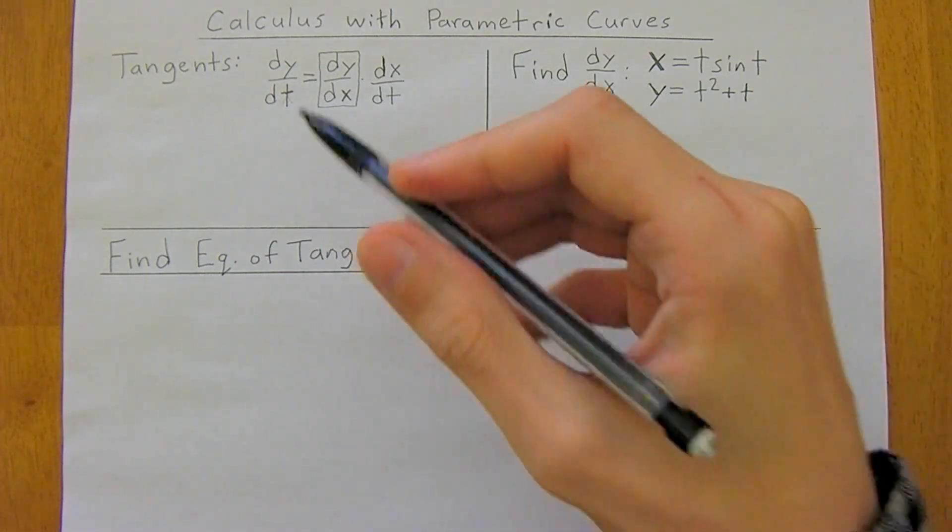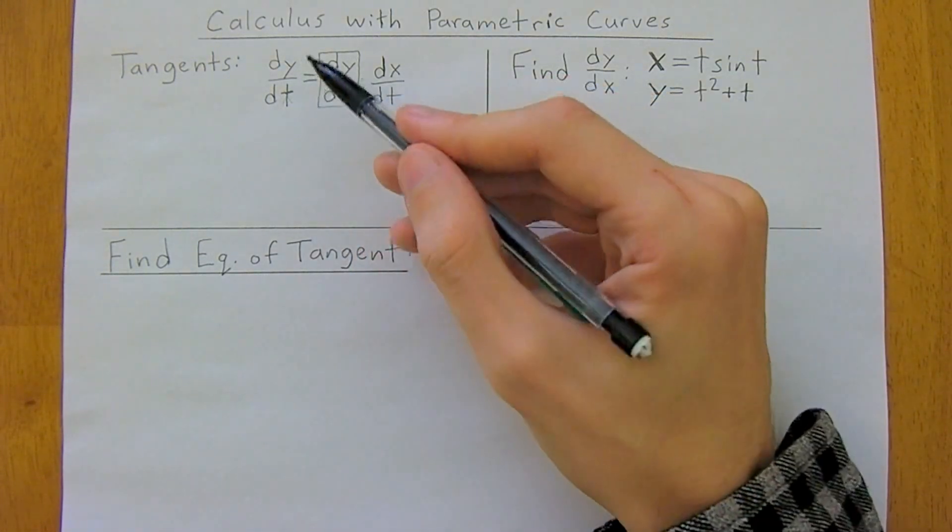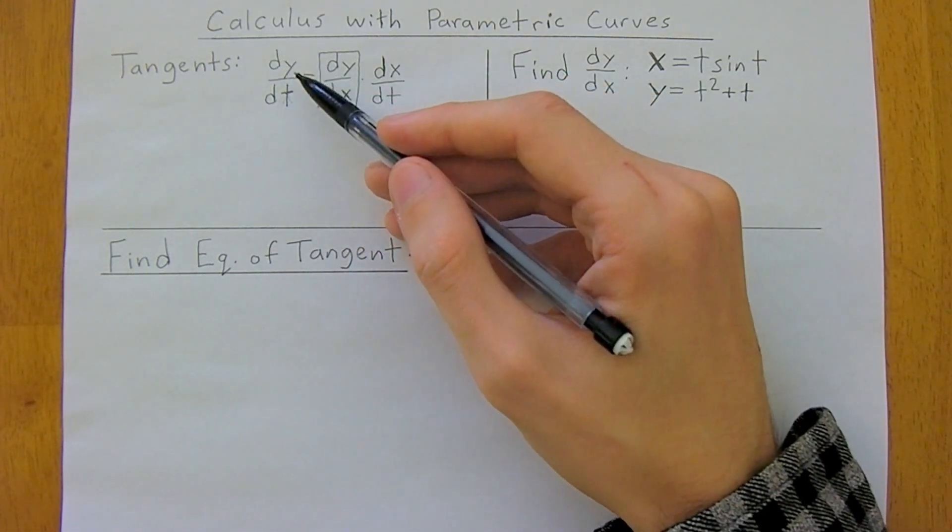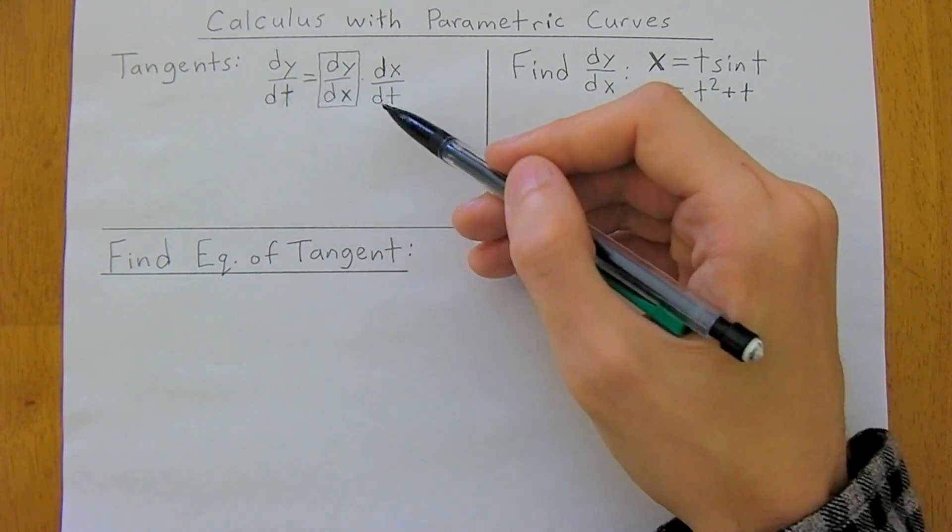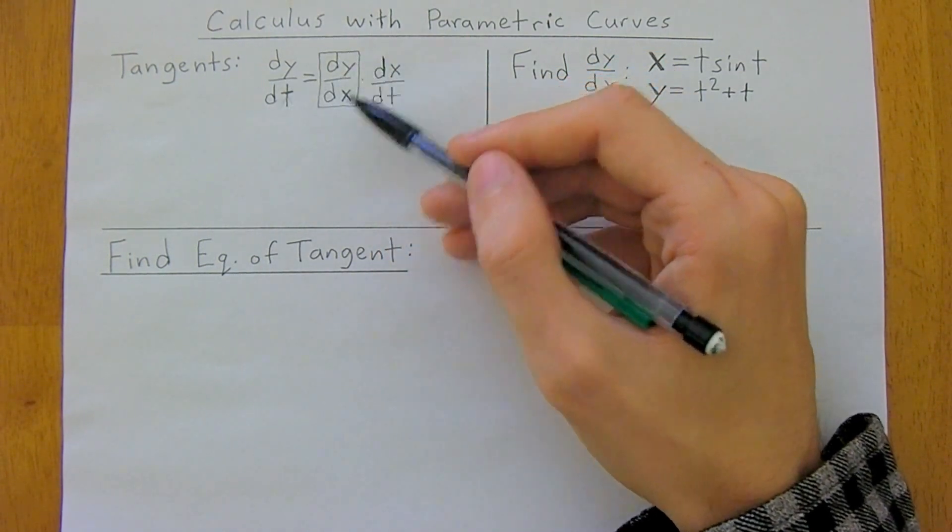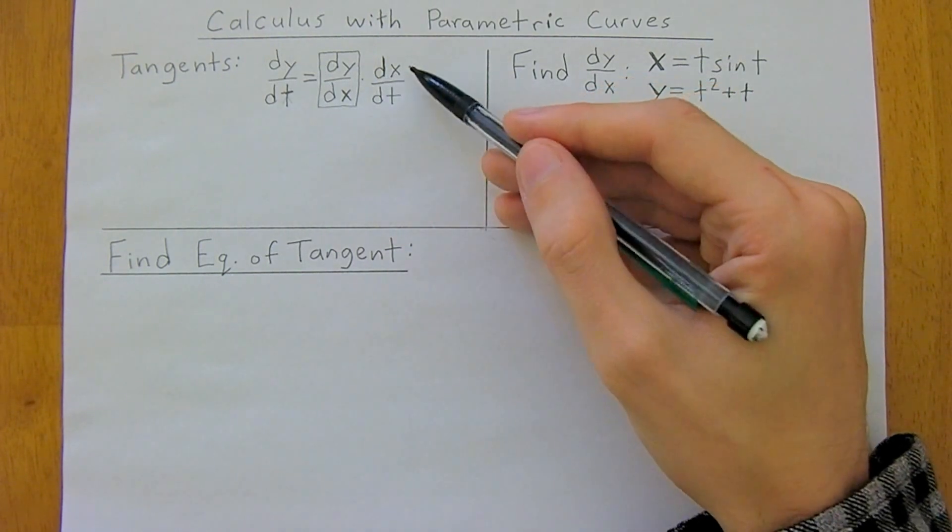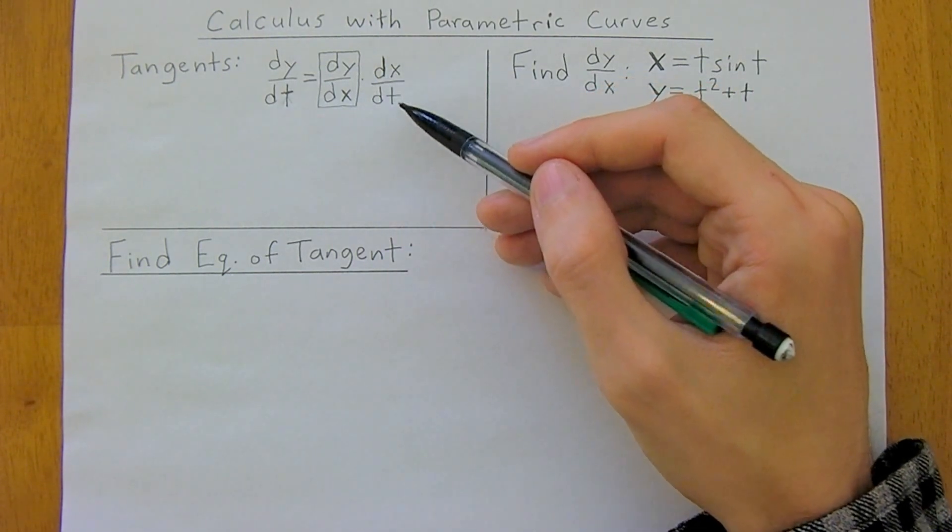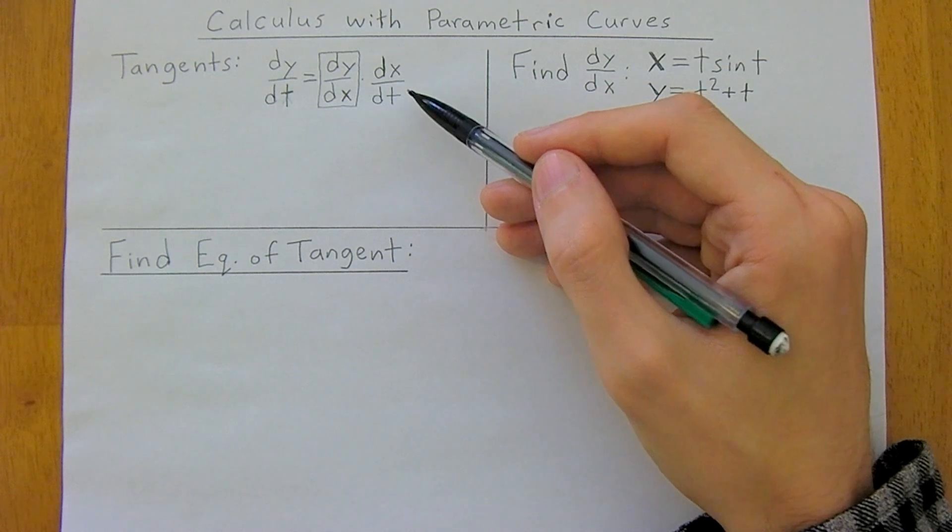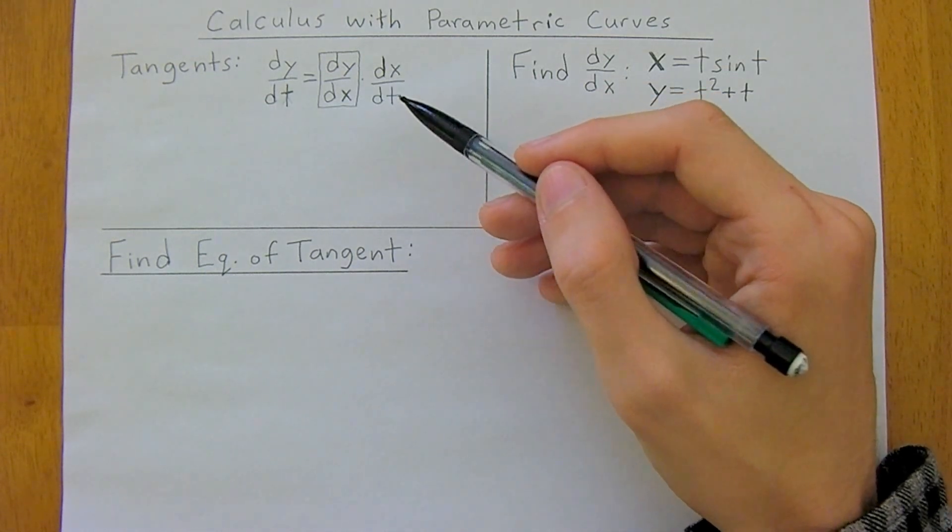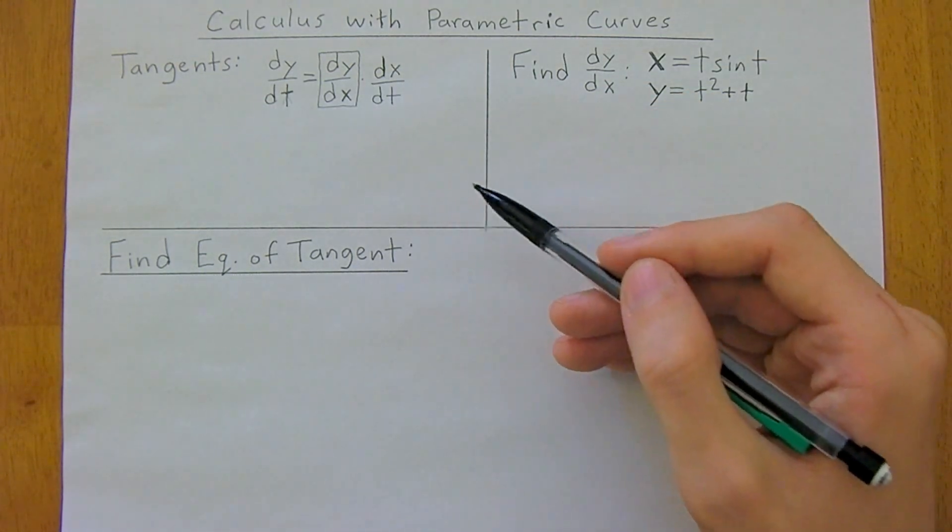And to do this you can just think of the chain rule, so say you wanted to get dy dt, this would be equal to dy over dx multiplied by dx over dt. And so if you rearrange this now, we'll get down to our equation for finding tangents.